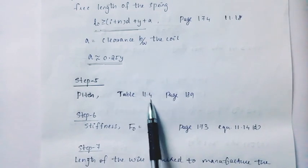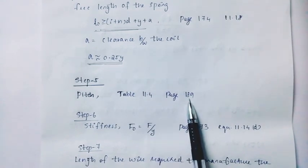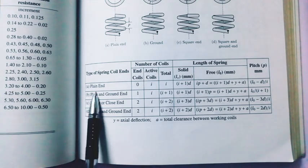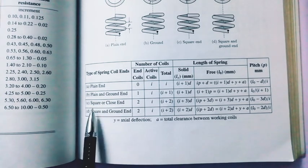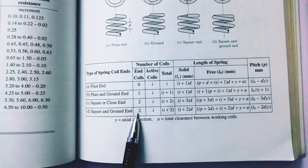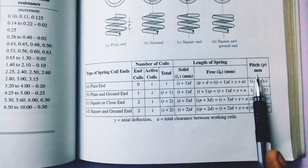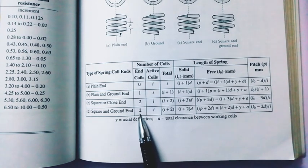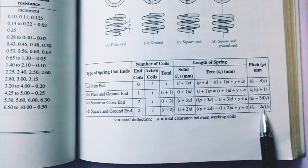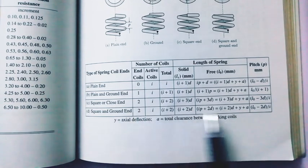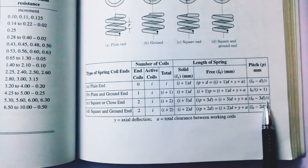Step 5, pitch on Table 11.4, page 189. Plane end, ground end, square end. End coil is 2. Pitch equation: L0 minus 2d divided by i. Square end: 2, L0 minus 2d divided by i. Square or closed end: 2, L0 minus 3d divided by i.